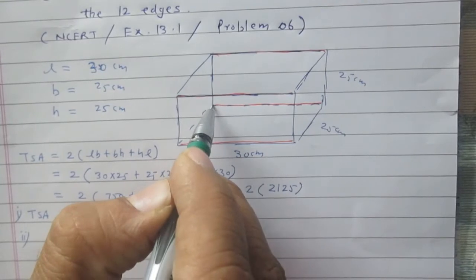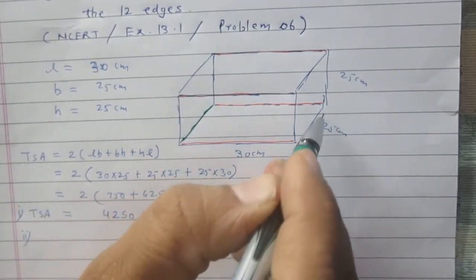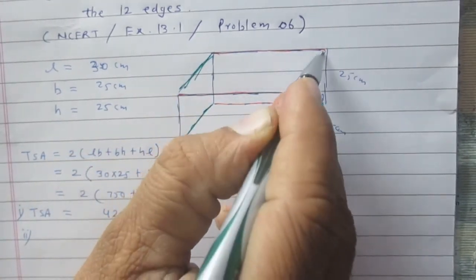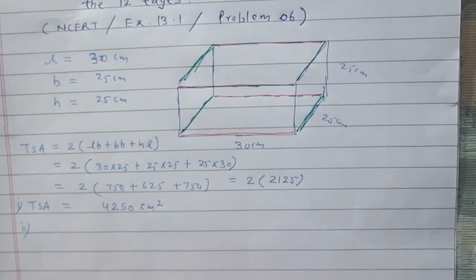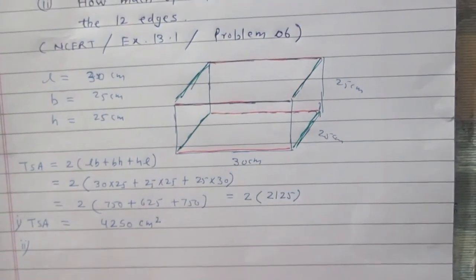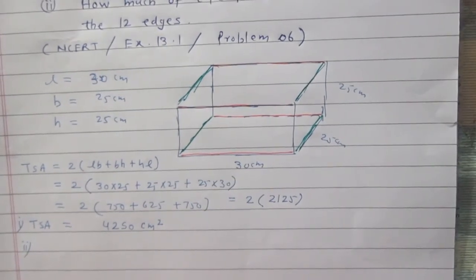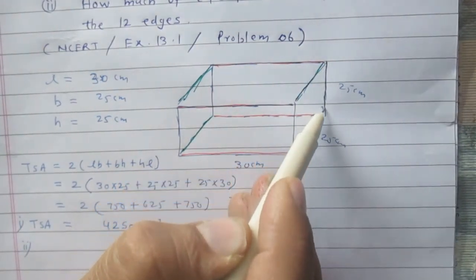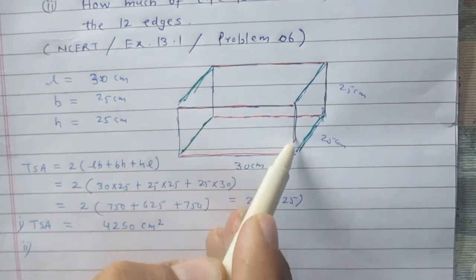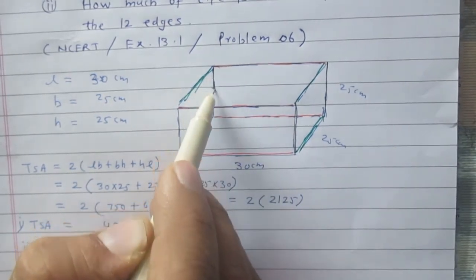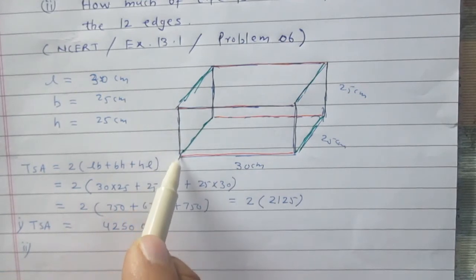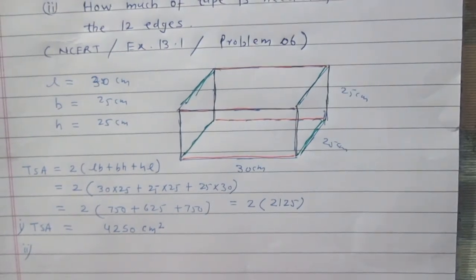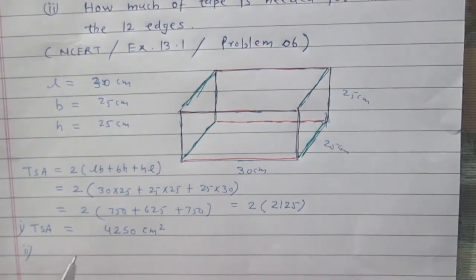Similarly, there are four edges along the breadth — first, second, third, and fourth. The remaining four edges are along the height — number one, two, three, and four. So out of the 12 edges, four are along the length, four along the breadth, and four along the height.